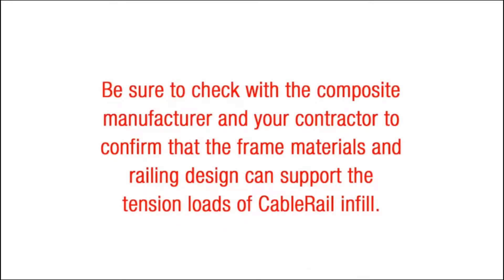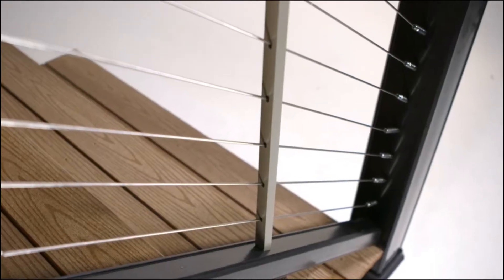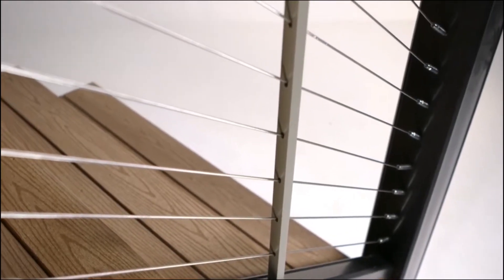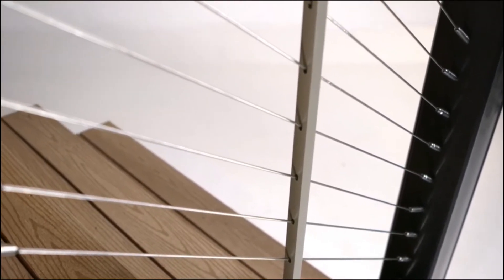Be sure to check with a composite manufacturer and your contractor to confirm that the frame materials and railing design can support the tension loads of cable rail infill. We've installed a Feeney intermediate picket to provide additional support for the cables mid-span between the sleeve posts.